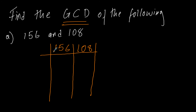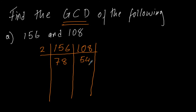So we use prime factors which can divide both numbers. 2 can divide these two numbers since both numbers are even. So 156 divided by 2 we get 78, and 108 divided by 2 we get 54.